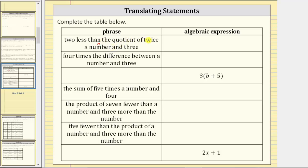So the quotient of twice a number and three is 2n — that's twice a number — divided by three. Remember, a fraction bar means division. And we want two less than this quotient, so now we subtract two. Here we have two less than the quotient of twice a number and three.